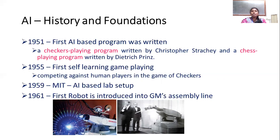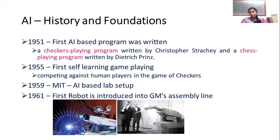In 1955, a self-learning program was developed; in 1959, MIT established an AI-based lab; in 1961, the first robot was designed. This first robot — called Unimate — was a structure used in factories for welding, where toxic gases and dangerous conditions made human work hazardous. The robot arm would work in place of humans, with a single arm design.